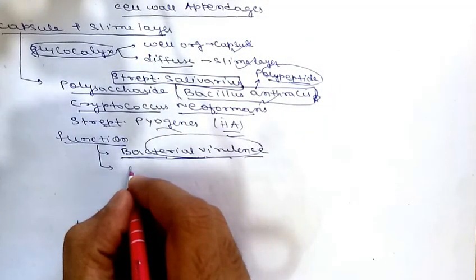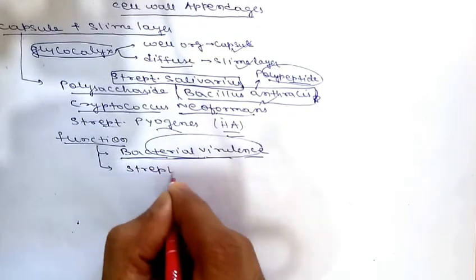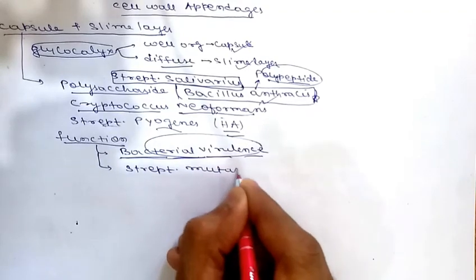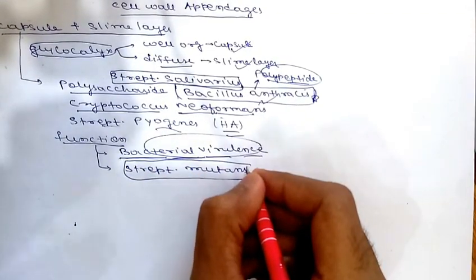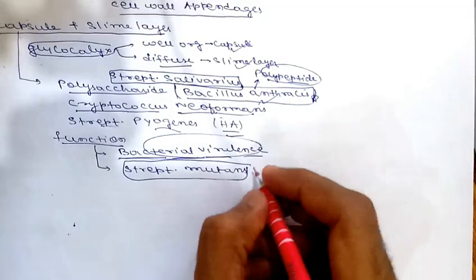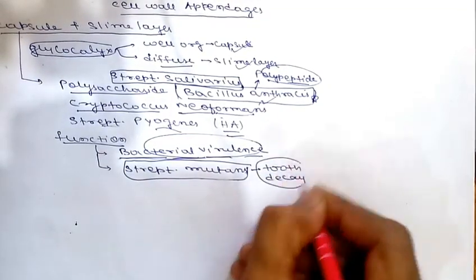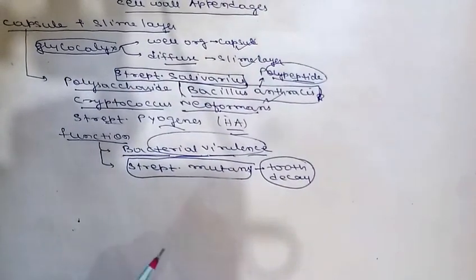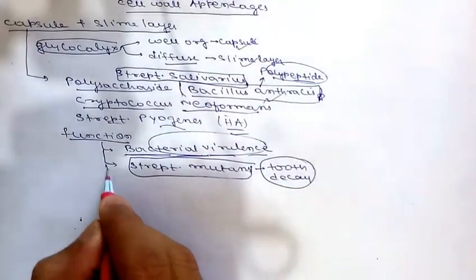The capsule can also act as a source of nutrient energy. For example, Streptococcus mutans colonizes teeth and ferments the sugars in the capsule, forming acid byproducts. Those acid byproducts cause tooth decay, so Streptococcus mutans is responsible for tooth decay due to its capsule.